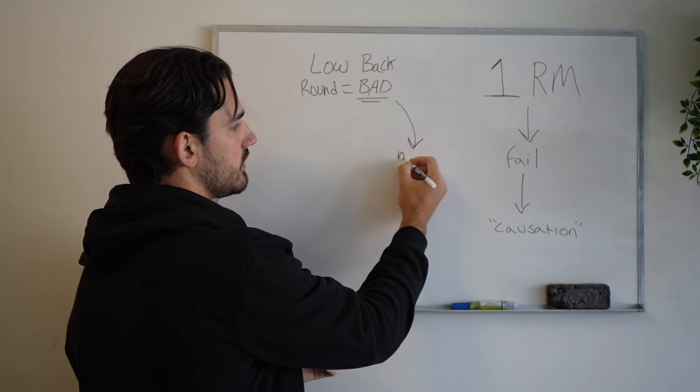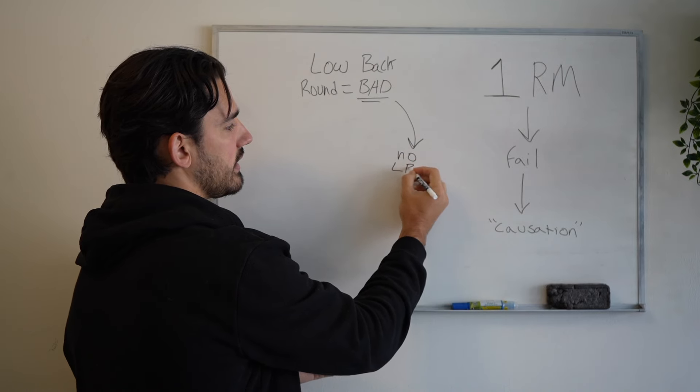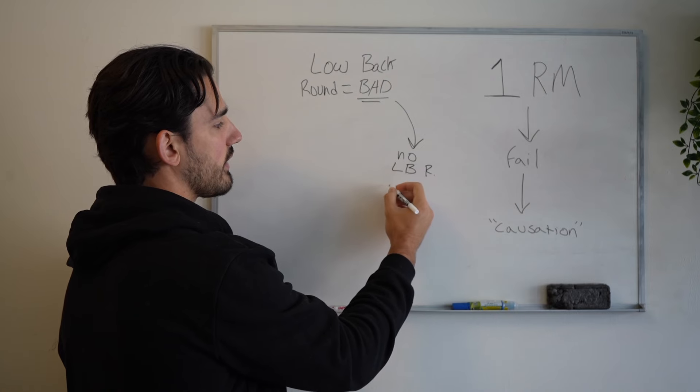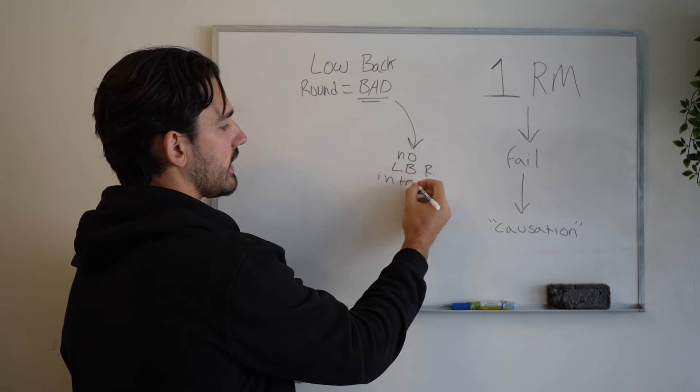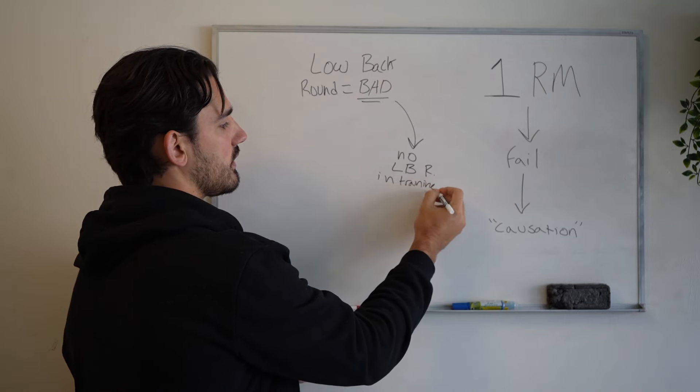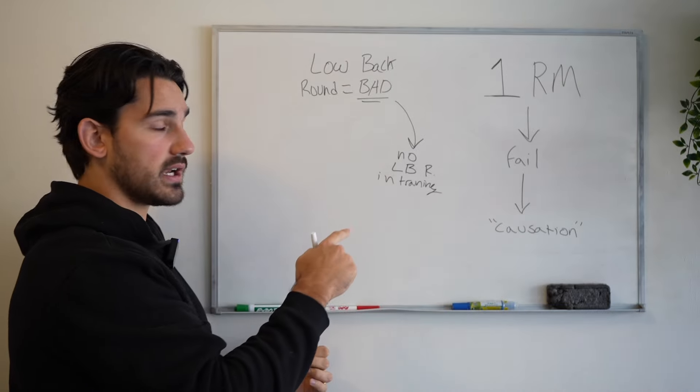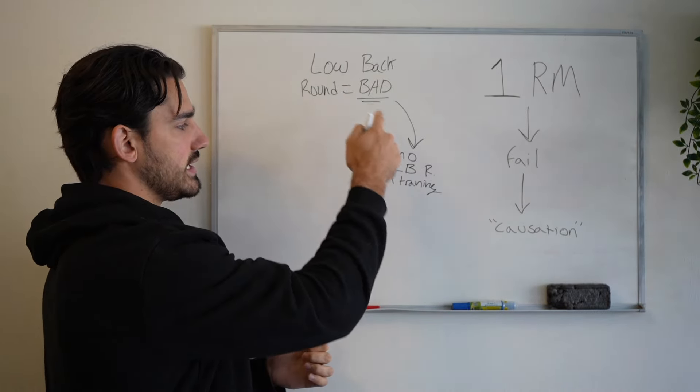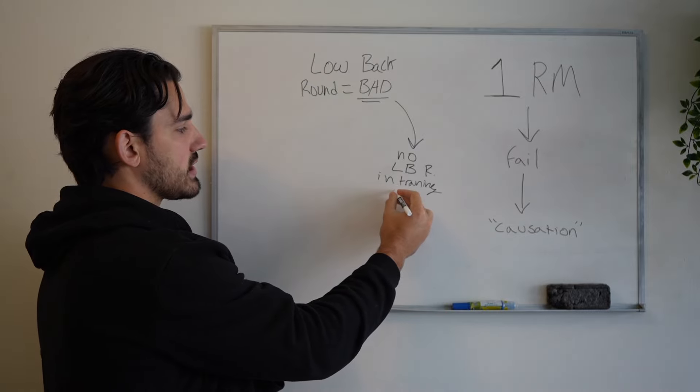That leads to no low back rounding in training. Okay, so no low back rounding in training comes from low back rounding being bad. The belief leads to the action. What does the action lead to?